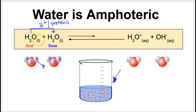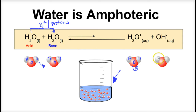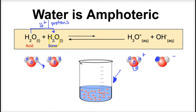When a water molecule donates an H+ to another, we end up with H3O+, the hydronium ion, which has one oxygen and three hydrogens. And the water molecule that loses an H+ becomes OH minus, the hydroxide ion. So water is amphoteric — some water molecules donate H+ and some accept H+.